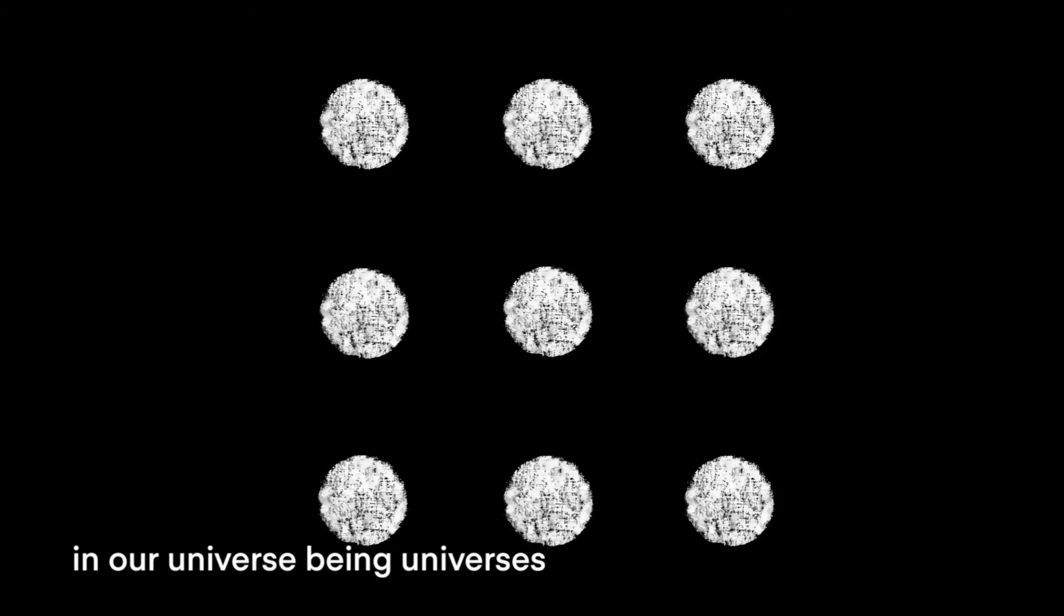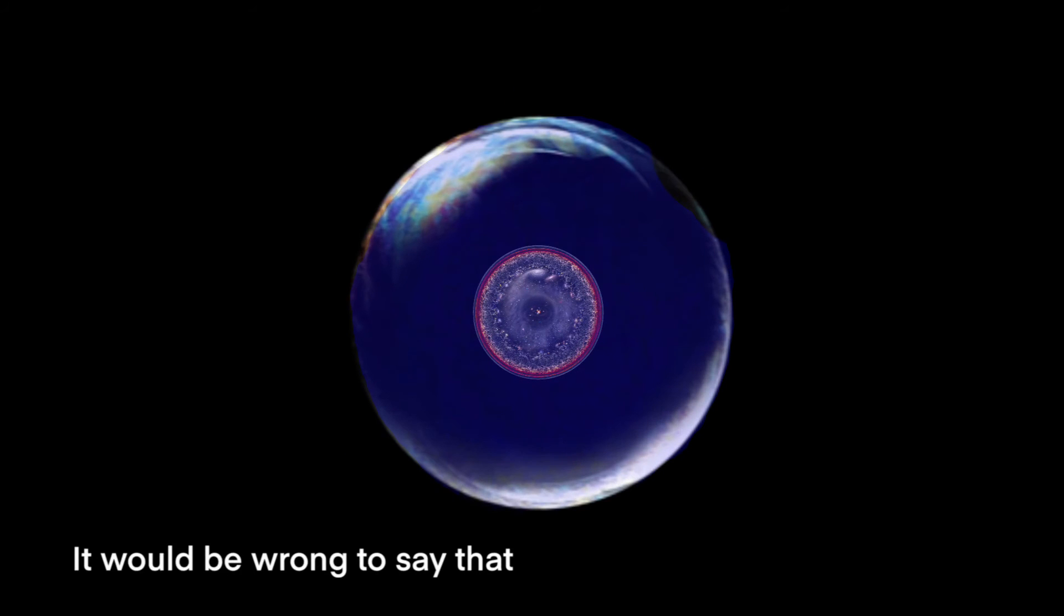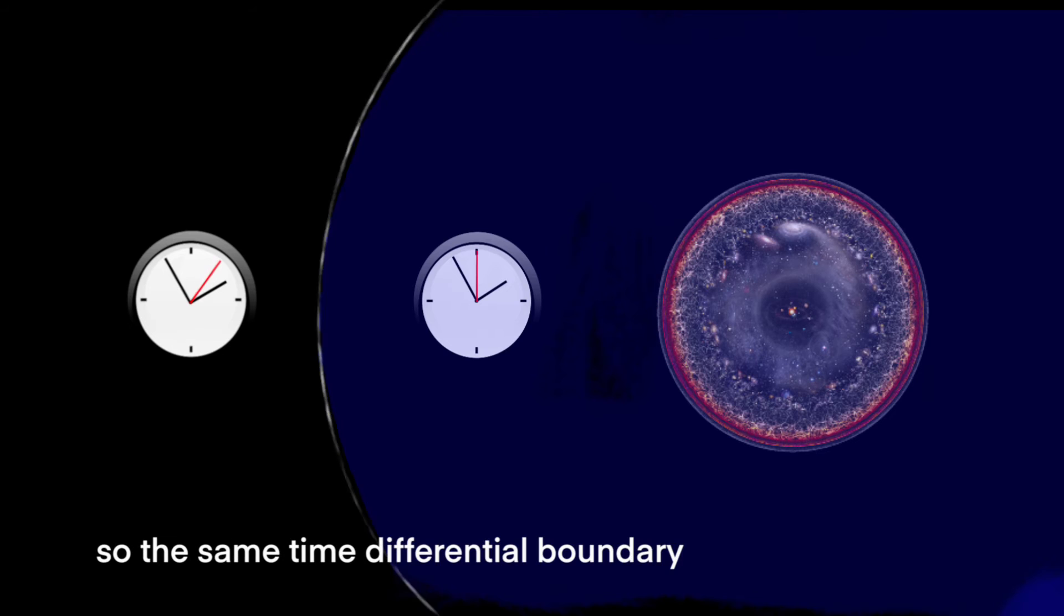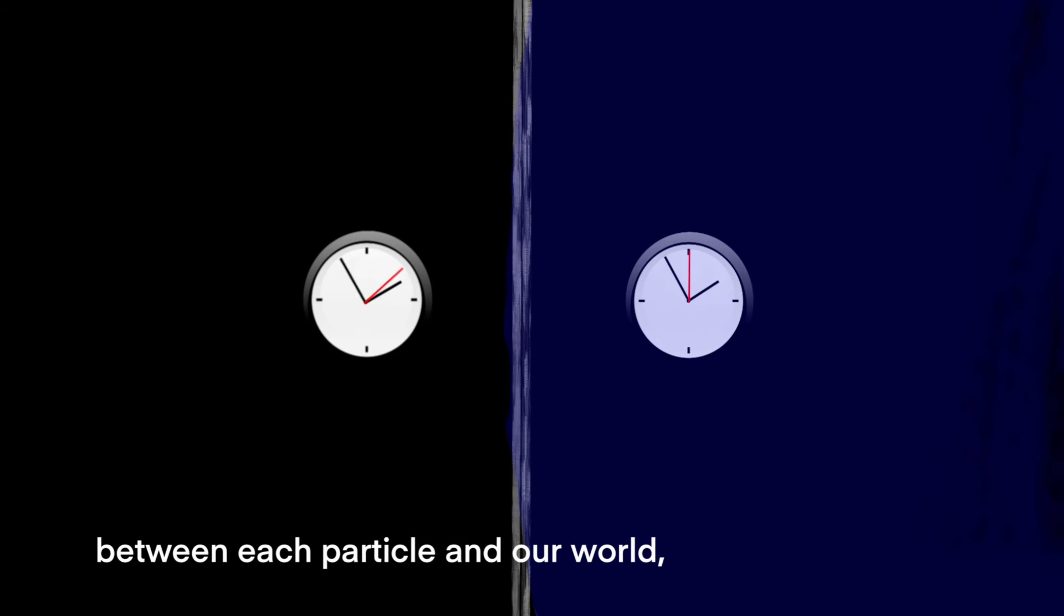Now think again about the time differential boundary between our universe and the higher universe, and imagine that every elementary particle in our universe is a universe on the next level down, with the process working in exactly the same way. It would be wrong to say that every elementary particle contains a miniature universe because the physics behind how it works is so bizarre we can't experience it in our everyday world. Time within the elementary particle bubble would be passing at a much slower rate than our time frame, so the same time differential boundary between each particle and our world creates its own local distortion in space-time.